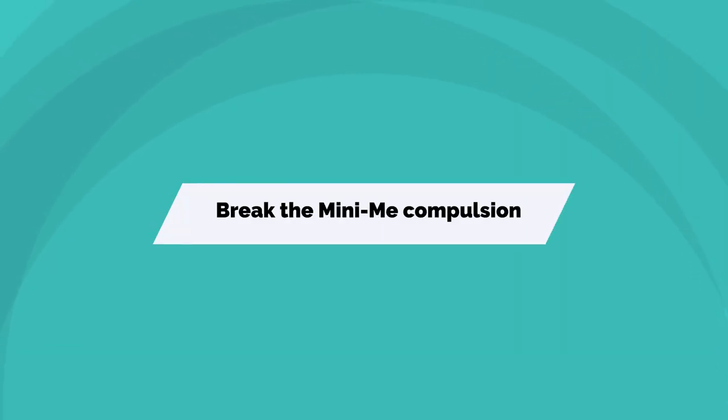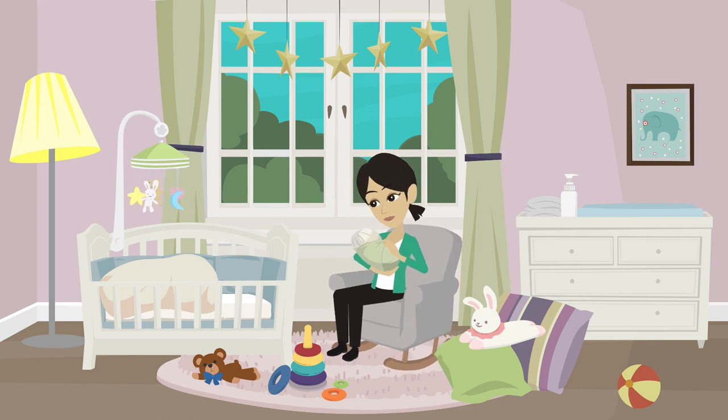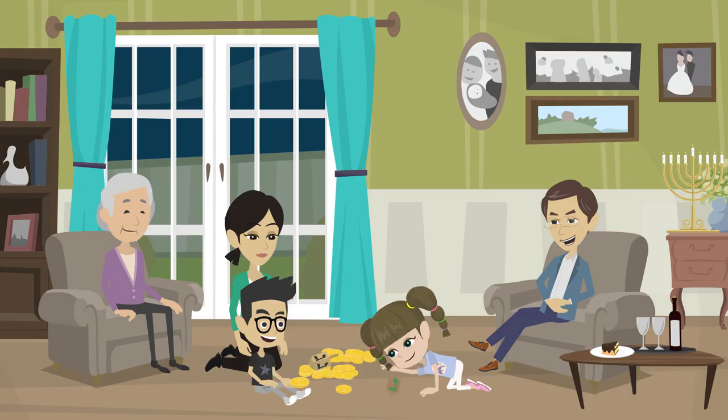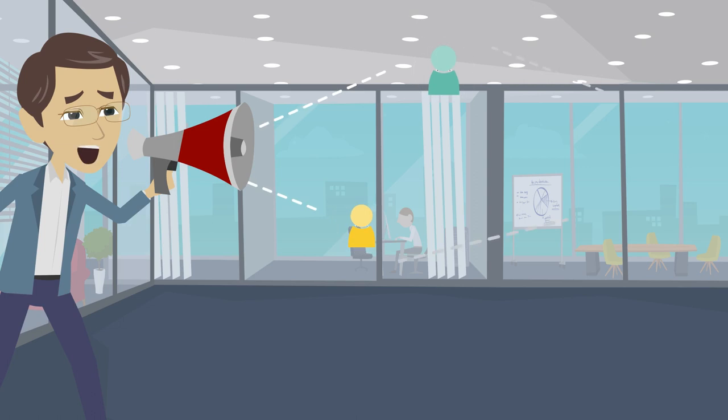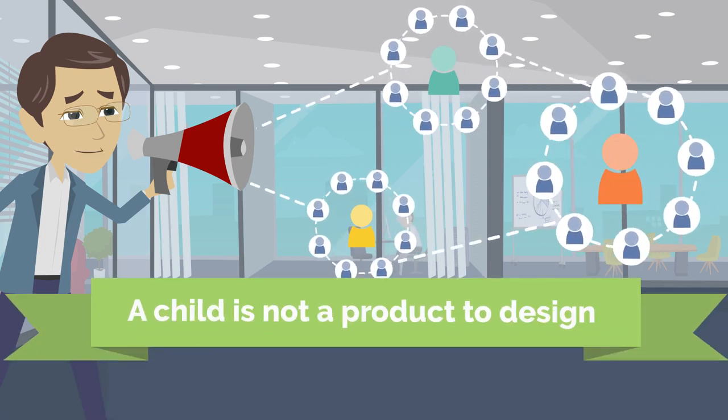Break the mini-me compulsion. One of the most difficult concepts to accept in parenting is that you don't have title to your kids. Custody, yes. Ownership, no. They are guests in your house and only temporary guests. A child is not a product to design, a project to be managed, or a possession to show off.